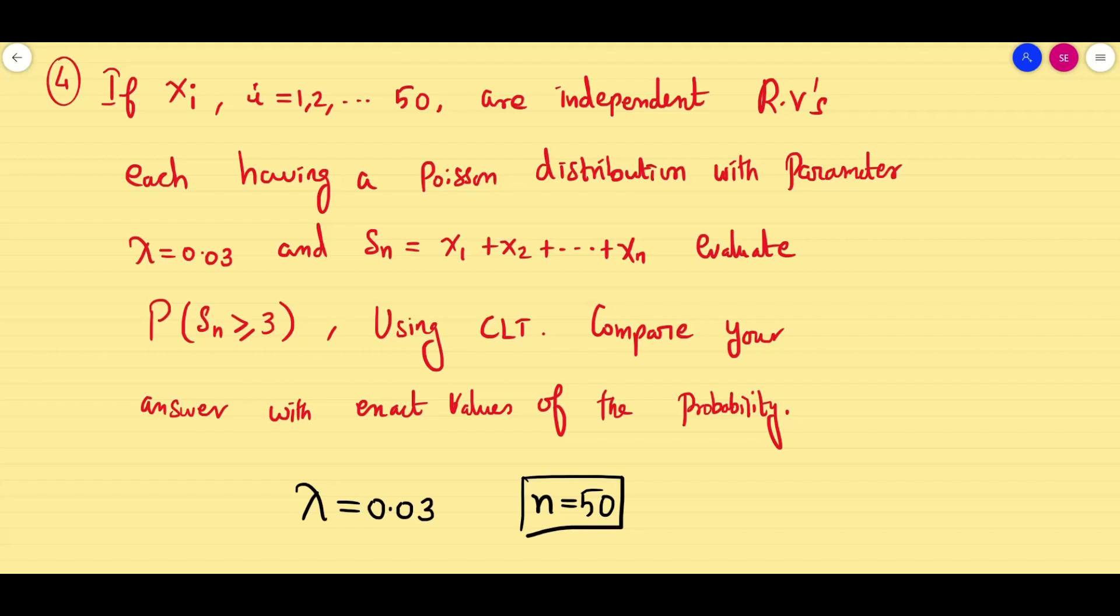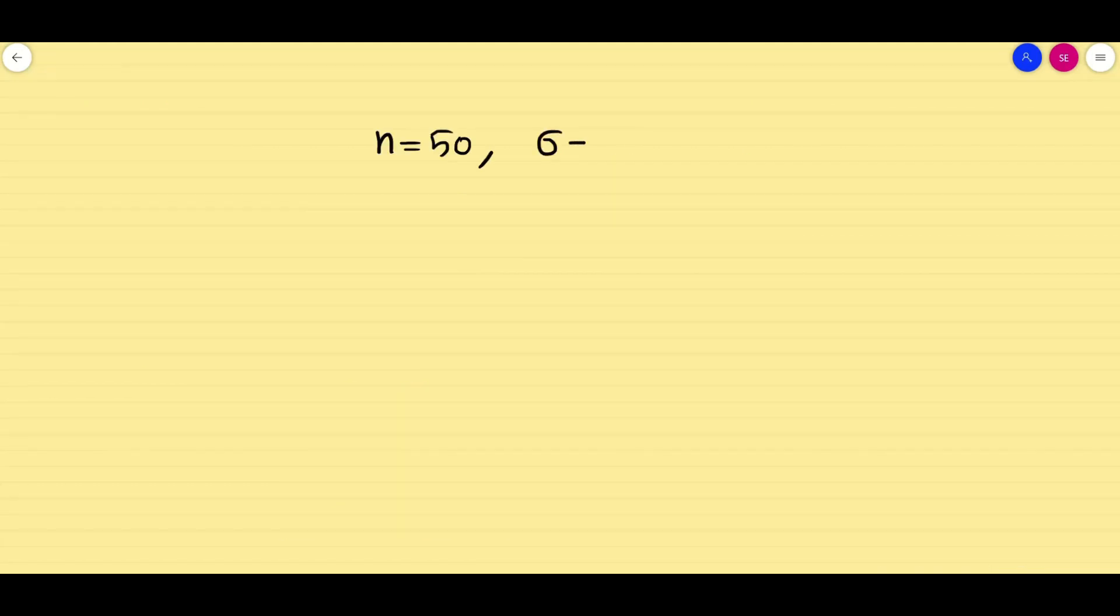The next problem: There are 50 random variables considered. I will take first of all n equals 50. And all follows Poisson distribution. My lambda is given as 0.03 directly. According to our problem, mu equals lambda equals sigma squared, all are 0.03. I can find sigma immediately, positive square root of variance. Now we have to evaluate probability of Sn greater than or equal to 3 using central limit theorem as well as compare with the exact values.